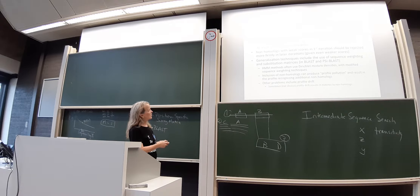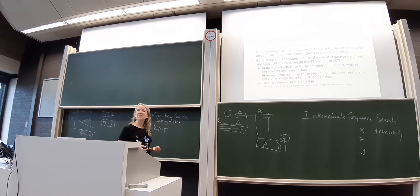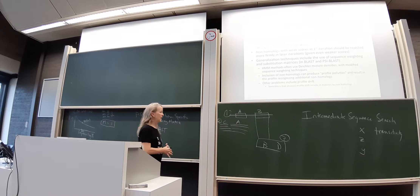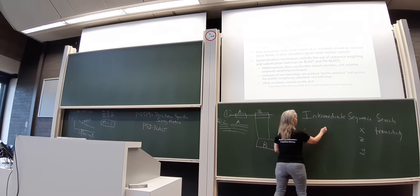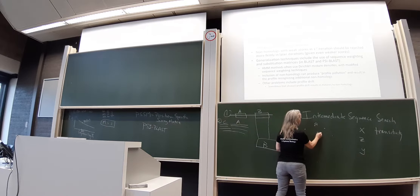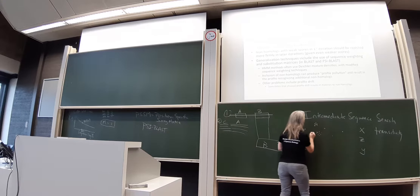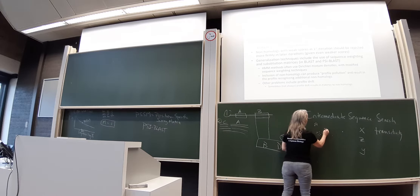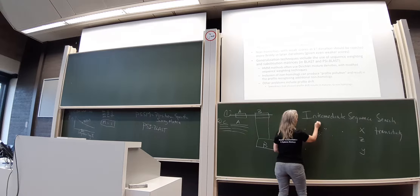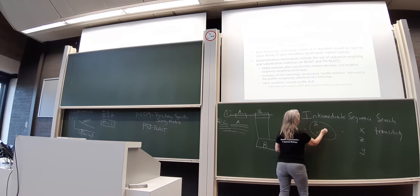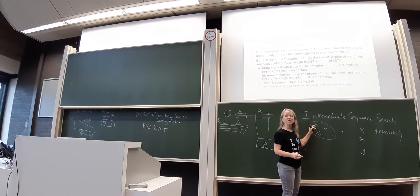Generalization techniques include sequence weighting, which is a way of distributing weights across the set of sequences you're using to construct your profile. Sometimes this means outliers will get a lot of weight. So if you have your sequence search and start with your query, in the first iteration there's a bunch of sequences that are not too far away, plus a couple of oddballs further away. Let's say you have four different groups: your query sequence, a large group of relatively close sequences, a smaller group not so far away, and one sequence a bit further.